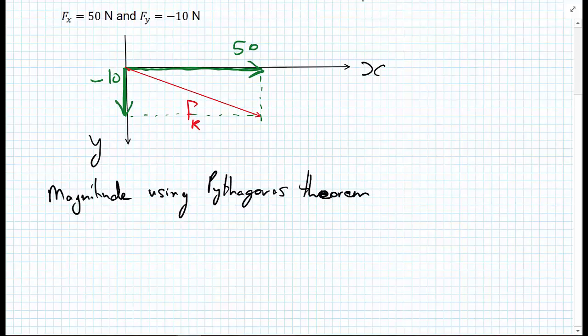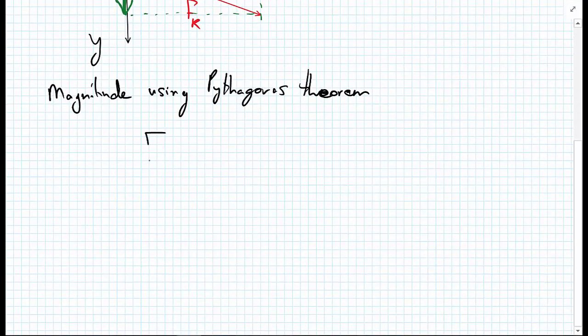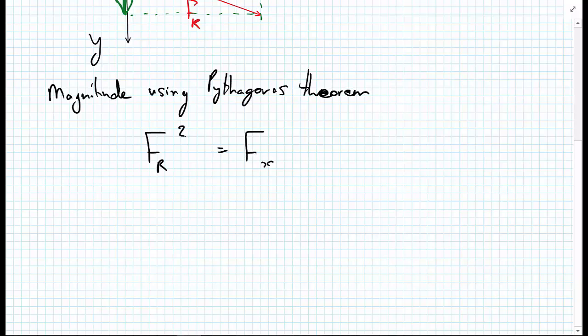That would state simply that the magnitude Fr squared equals Fx squared, so that's the 50 squared, plus Fy squared, that's the minus 10. We can rearrange that so that we have Fr equals the square root of Fx squared plus Fy squared.